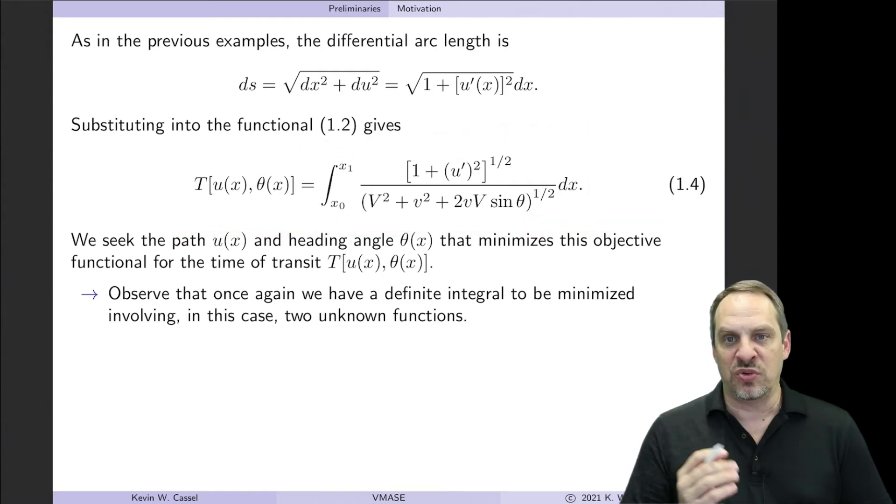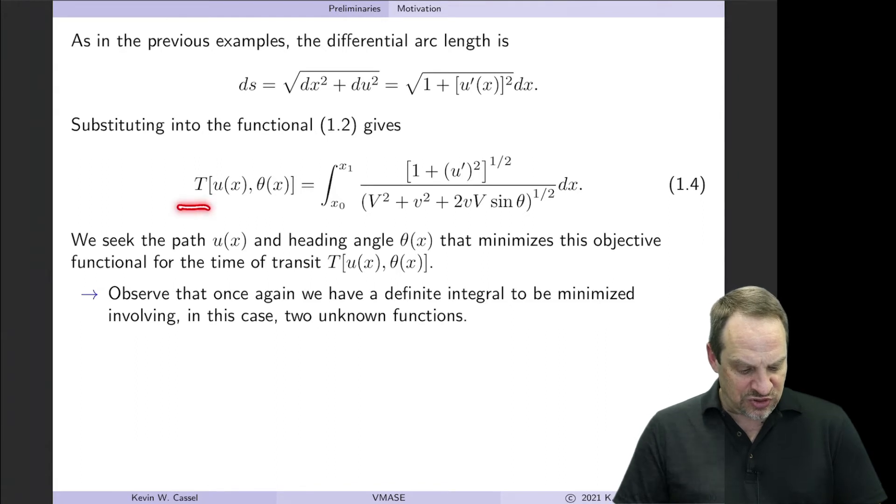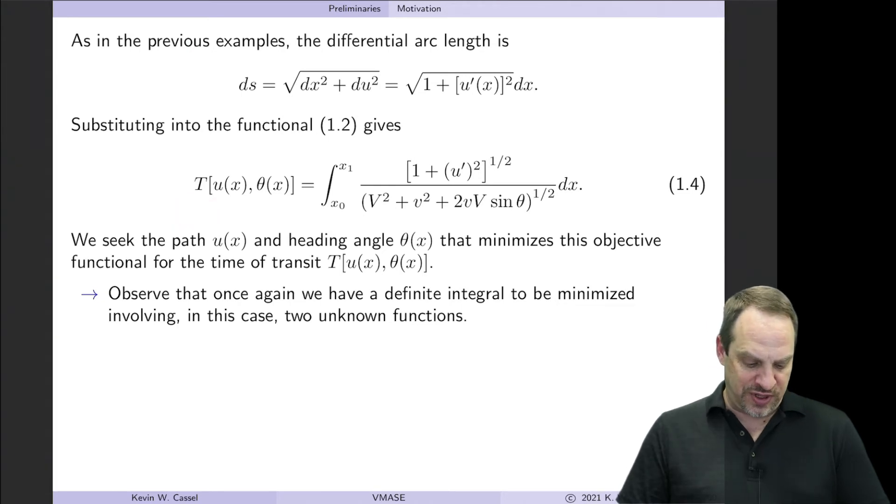Now you can see it looks a little more complicated than our previous two cases, but nevertheless, this is a functional capital T that involves two functions, U here, and theta here, that I need to determine in order to minimize the total travel time.